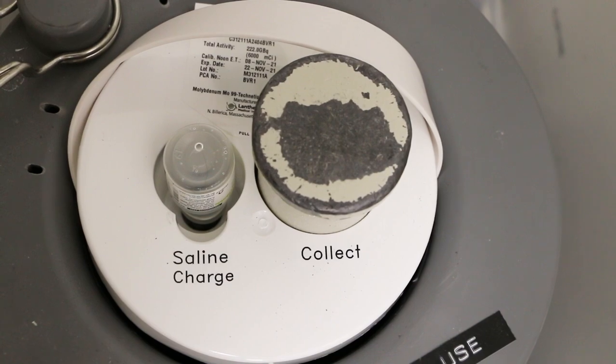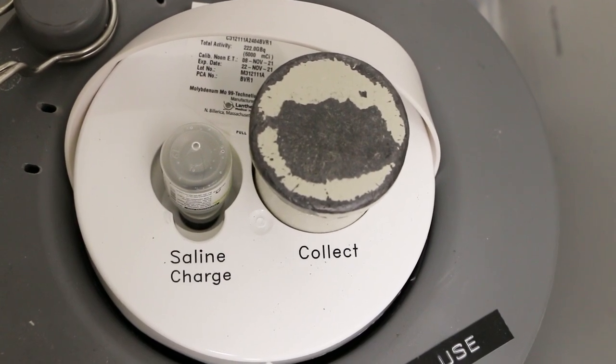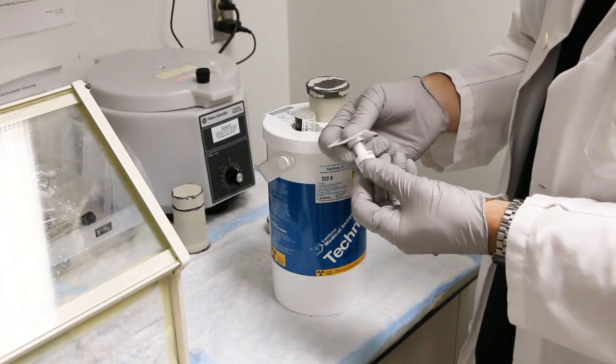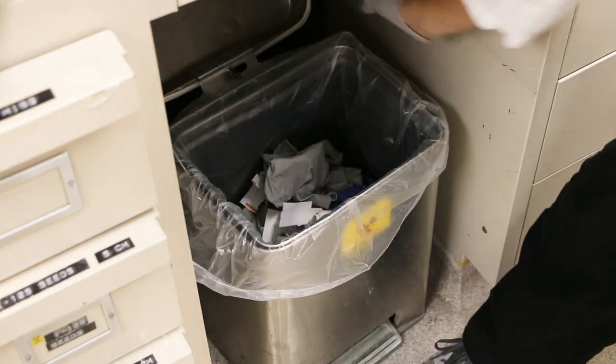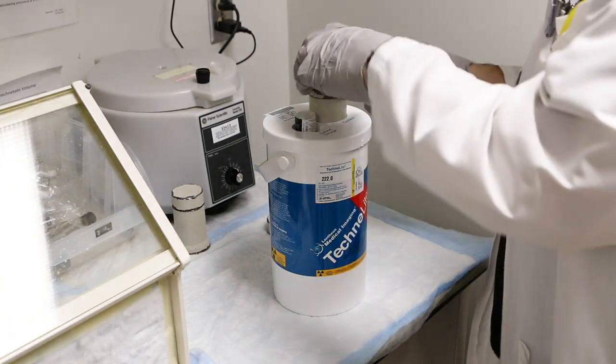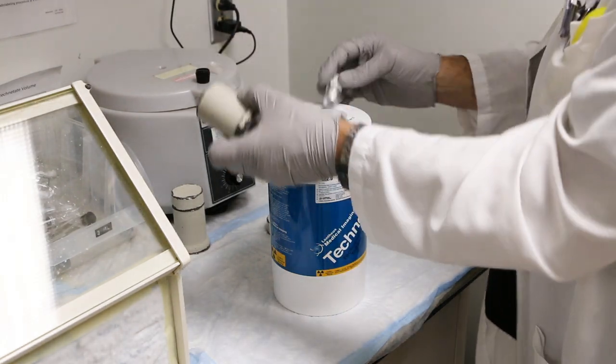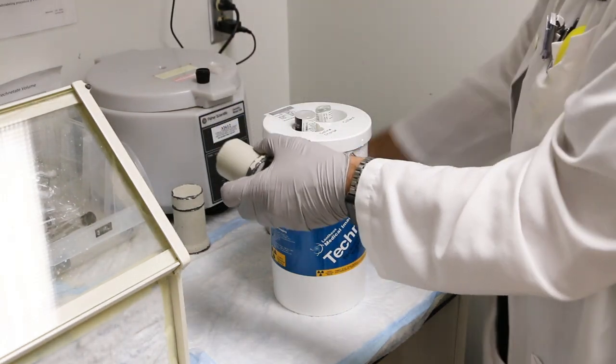You may notice the saline charge vial bubbling during the elution process. Before removing the collection vial, swab the needle seal vial with an alcohol wipe and discard the wipe in the hot trash. Replace the collection vial with the seal vial and quickly cap the collection vial.